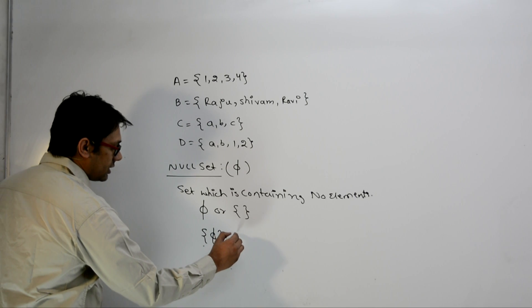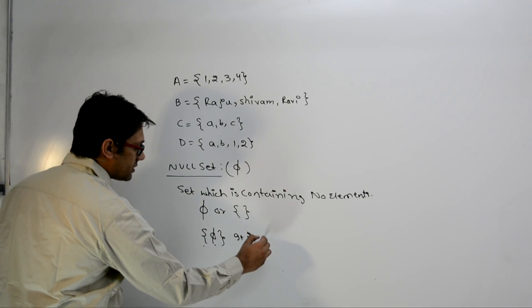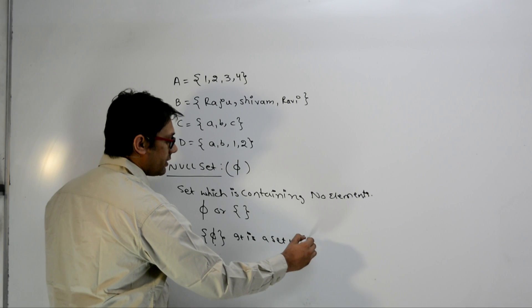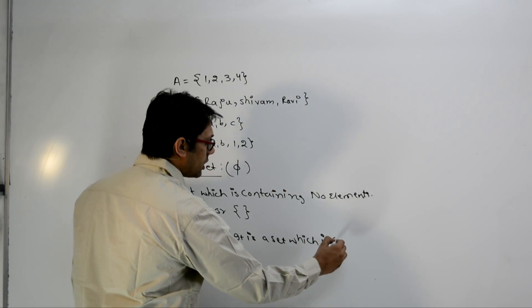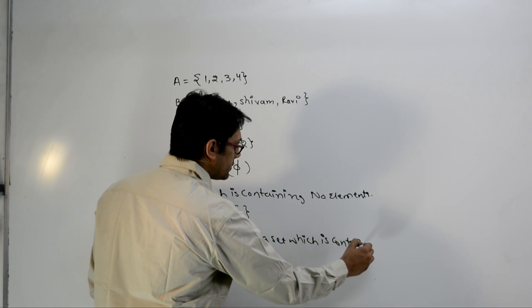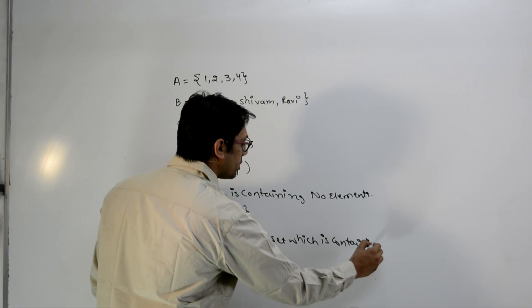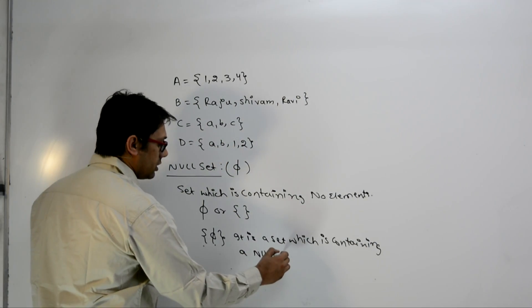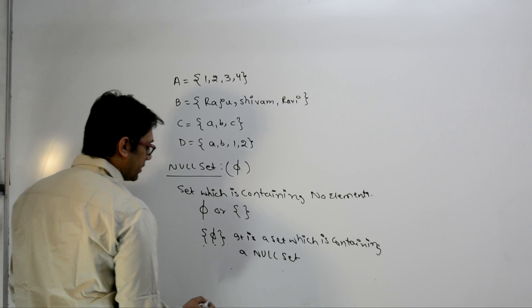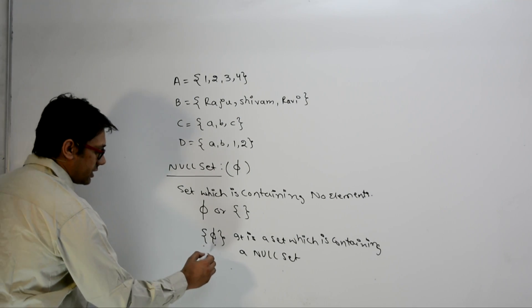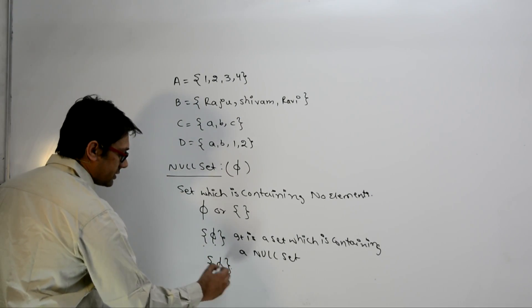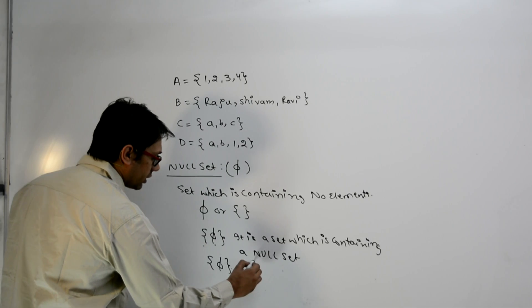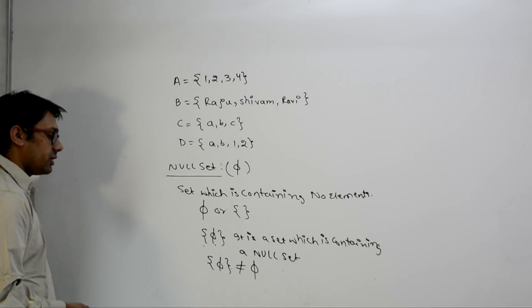So when we say a set containing a null set, it is not equivalent to phi, because phi itself denotes the null set — an empty set with no elements at all.